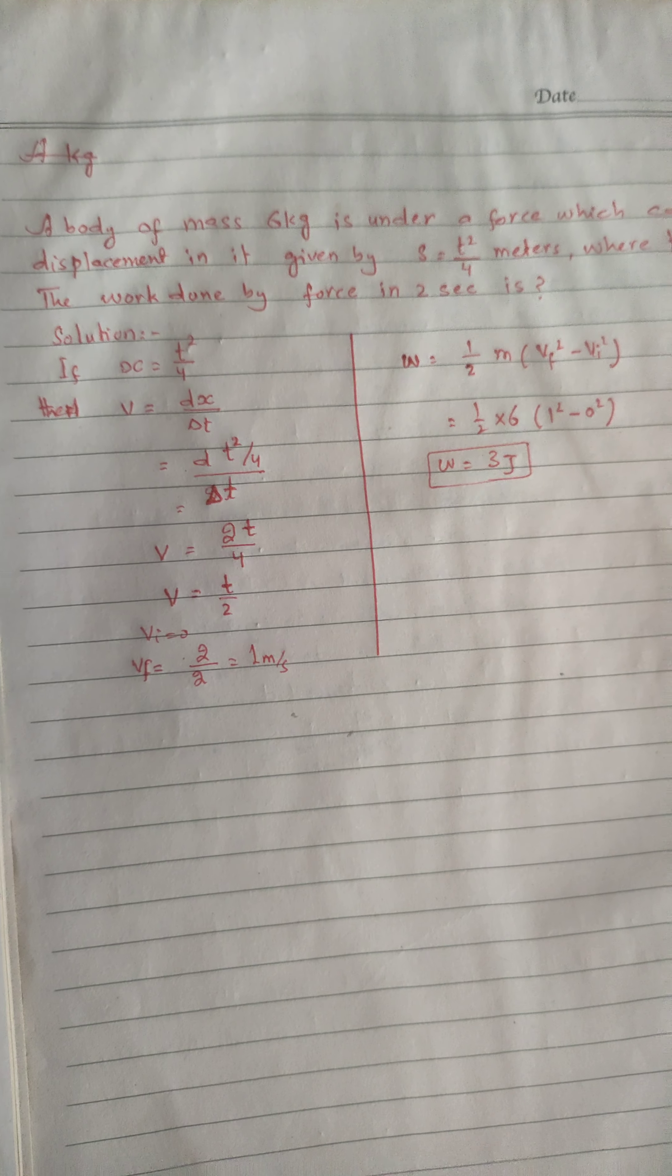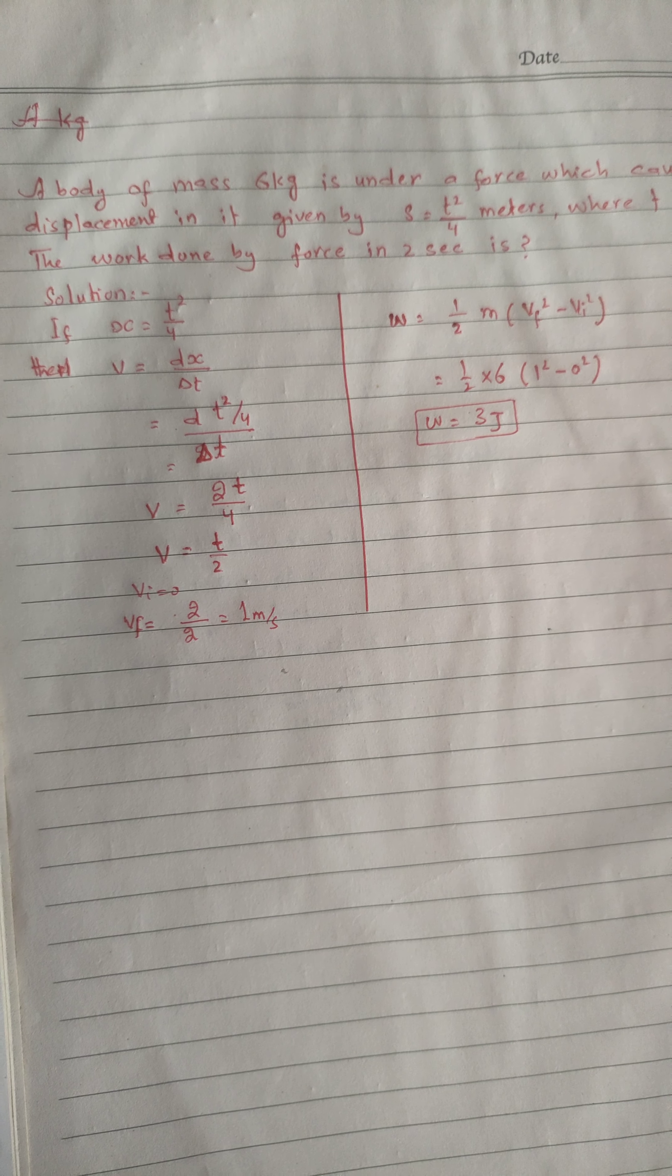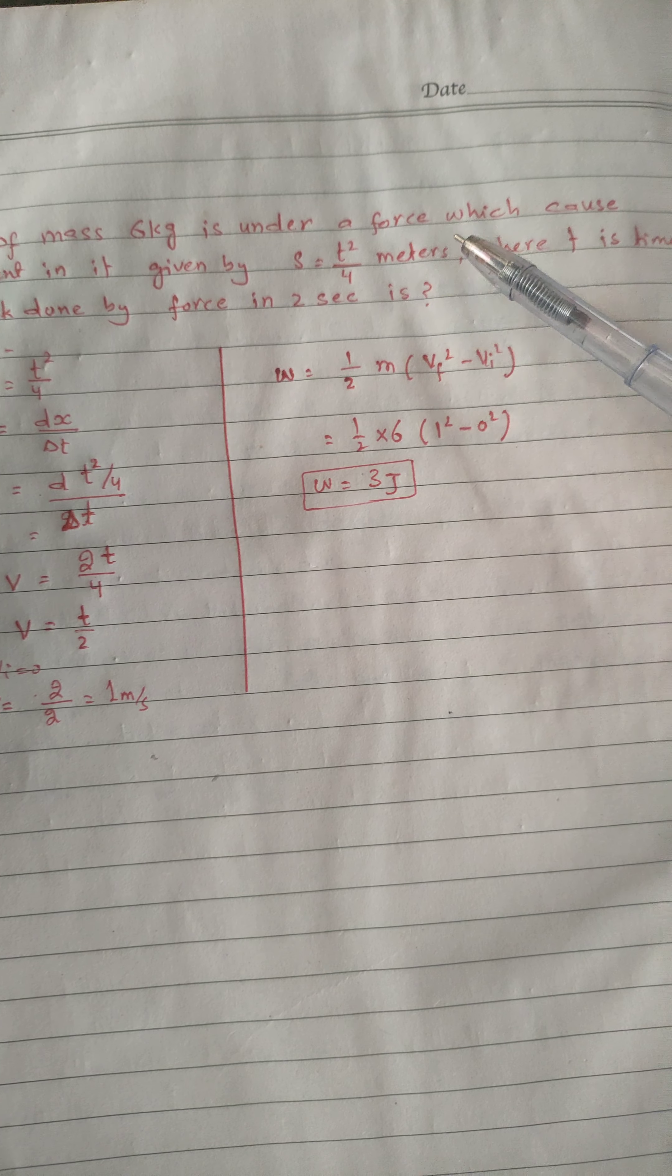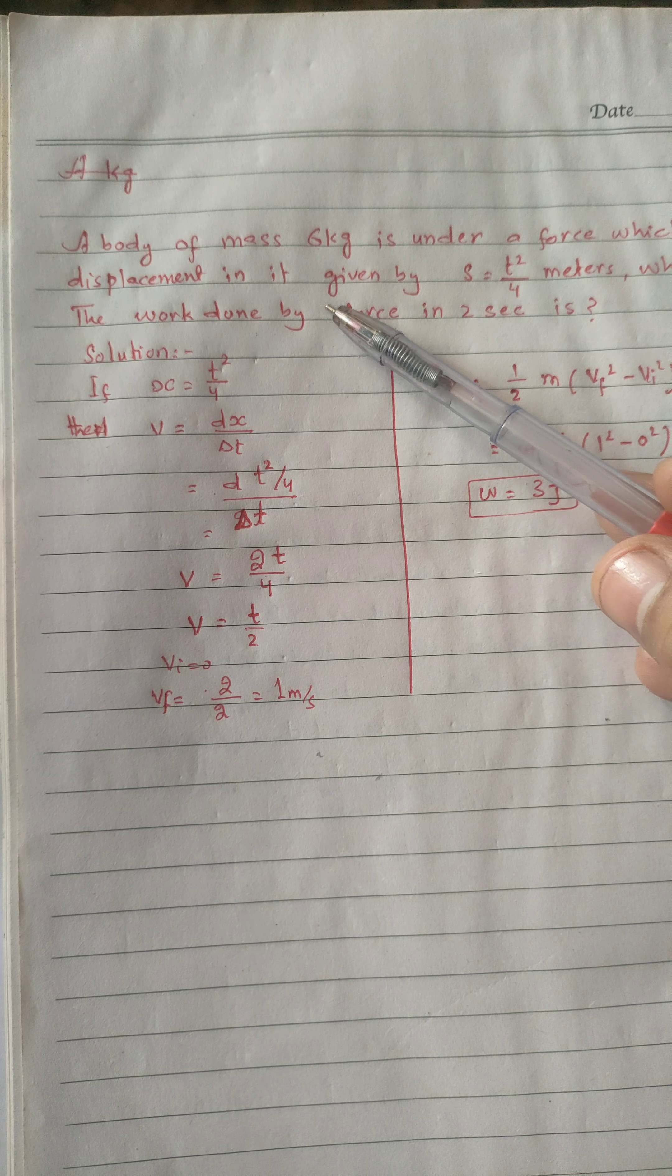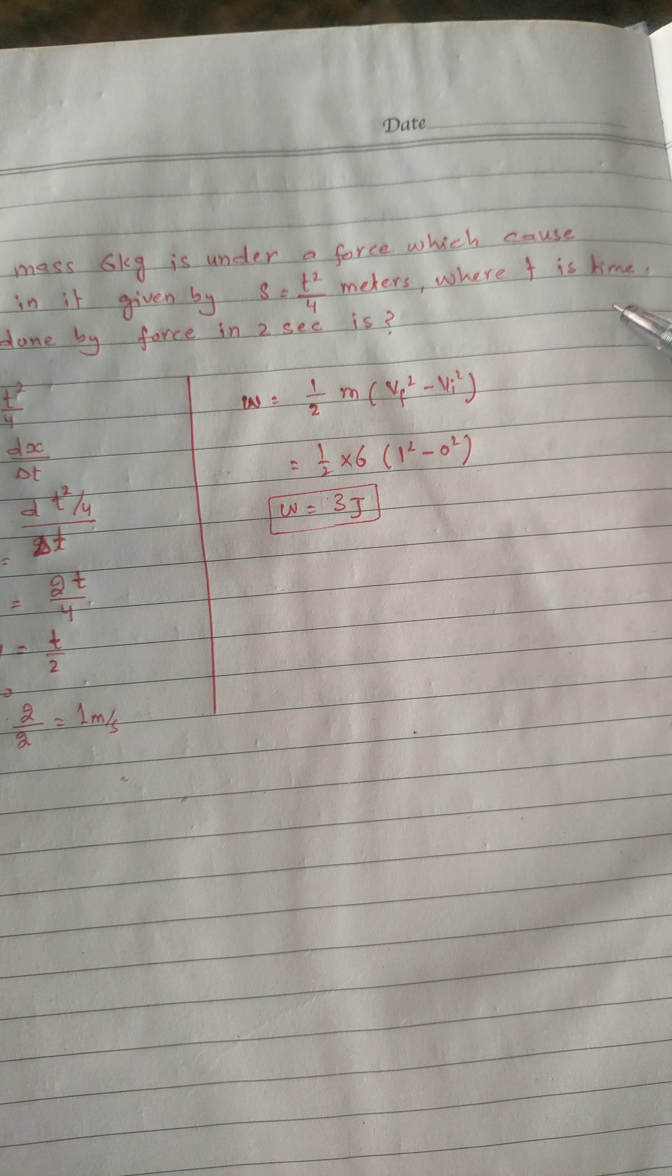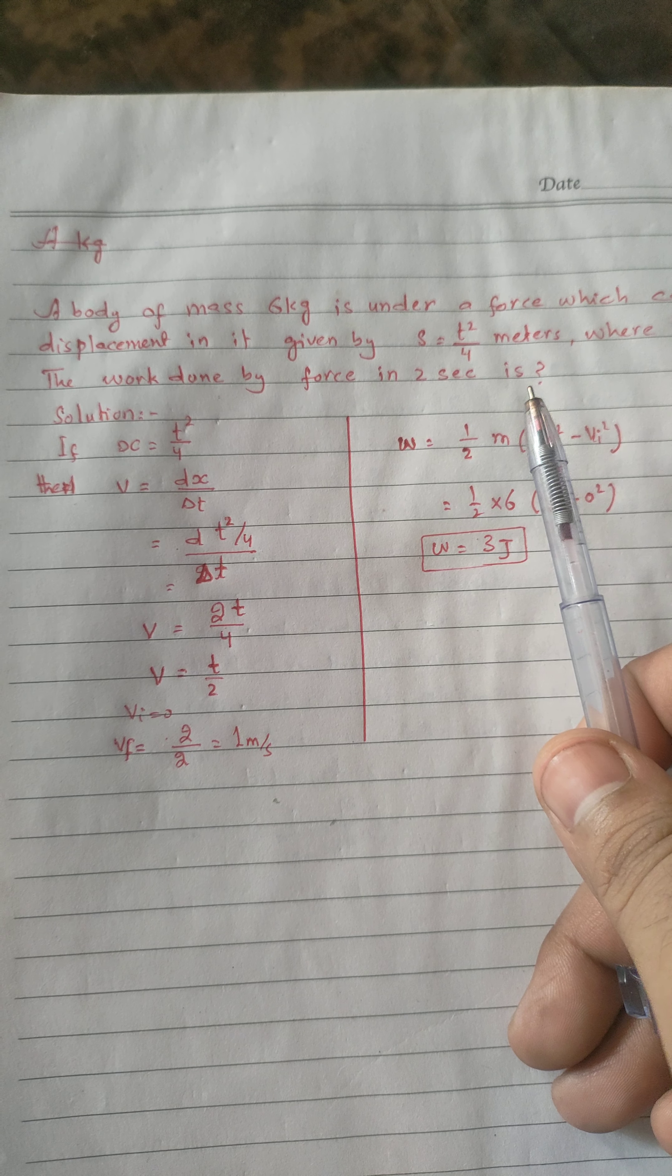Assalamu alaikum, dear students. A problem is here related to work, power, and energy. A body of mass 6 kg is under a force which causes displacement given by S = T²/4 meters, where T is time. The work done by force in 2 seconds is to be found.